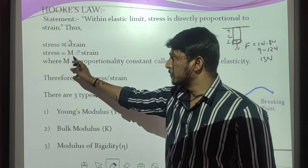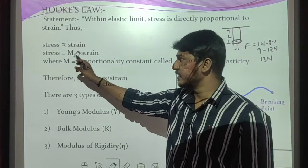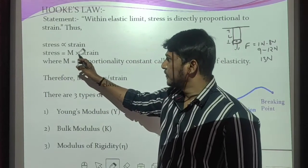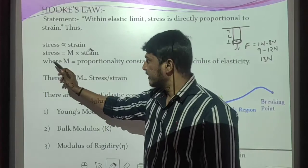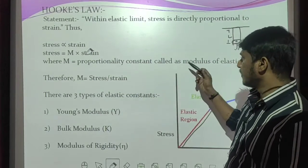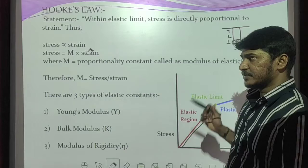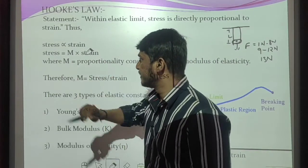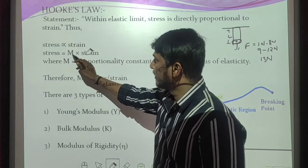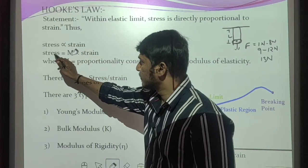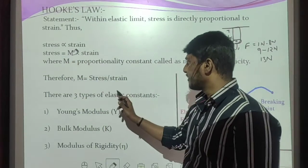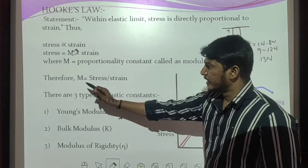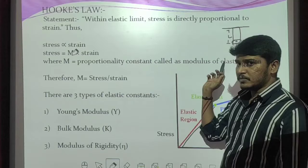Mathematically, stress equals M into strain, where M is the proportionality constant called the modulus of elasticity. Rearranging, M equals stress divided by strain — that is, M = stress / strain, where M is the modulus of elasticity.